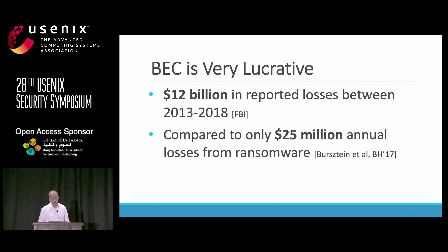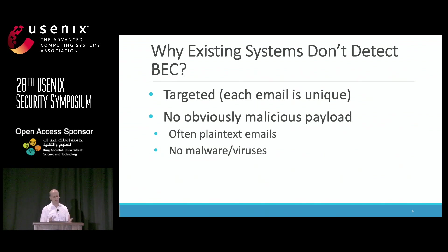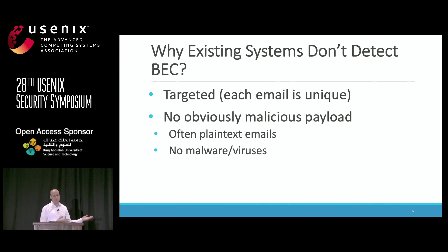You might ask why existing systems don't detect these attacks. There are two main reasons. First, BEC attacks are highly targeted — the attacker is manually crafting an email to a particular employee in a particular organization with specific context, so a spam filter won't pick this up. Second, the attack doesn't have any obviously malicious payloads. These emails are often just plain text with no malware or viruses, and even if there's a link it often comes from a high-reputation website.